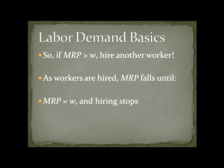This is the basic problem the firm solves. If the marginal revenue product — what you earn after hiring one more worker — is greater than what you pay that worker, then you should hire that worker, because hiring that worker will increase your profit. But as you hire additional workers, the marginal revenue product falls, until eventually it equals the wage. Once it equals the wage, there's no additional benefit from hiring more workers, so hiring stops.